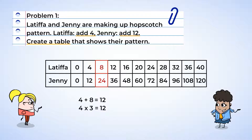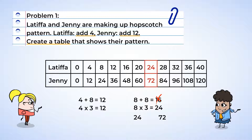And how about the numbers in the third box? If we add 8 to Latifah's 8, we have 8 plus 8 equals 16, which is not Jenny's 24. But if we multiply Latifah's 8 by 3, that does equal Jenny's 24. I think I'm sensing a pattern here. If we multiply Latifah's number by 3, then we should get Jenny's number. Let's check the seventh box: Latifah has 24 and Jenny has 72. And 24 times 3 is 72. So we were right — Jenny's numbers are 3 times bigger than Latifah's.